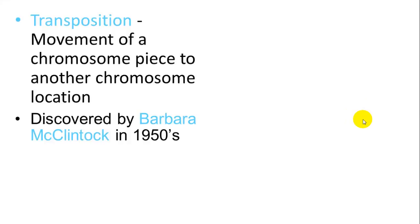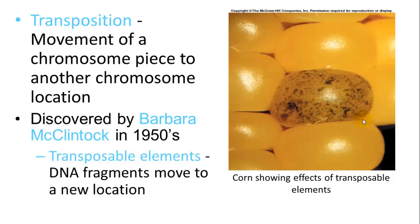Other things in cytogenetics include transposition, which is the movement of a chromosome piece to another chromosome location — similar to translocation but usually much, much smaller. This was discovered by Barbara McClintock in the 1950s. These small fragments are called transposable elements, and they move to a new location, causing a speckling effect in corn seeds which produces different coloration in different kernels.